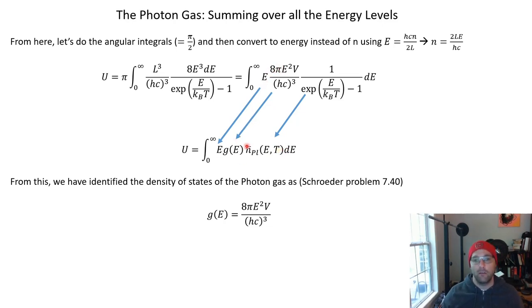But what this also immediately allows us to do is to say that the density of states of the photon gas is this middle expression here. And so it grows as E squared. Again, very different than the density of states of an ordinary gas, which grows as the square root of energy. So what we just did in this slide is basically Schroeder's problem 7.4d, which sometimes I assign as a homework problem, but not this semester.